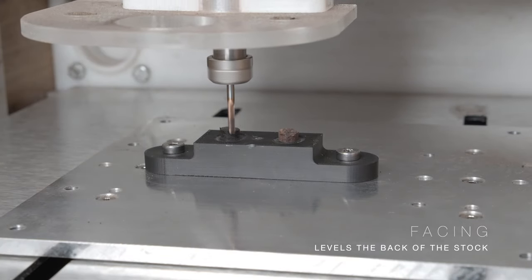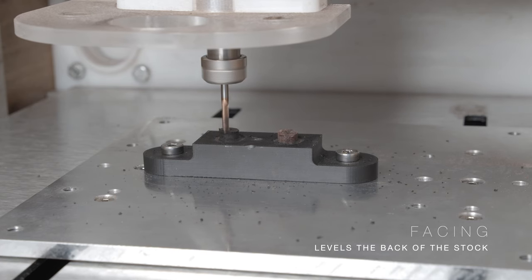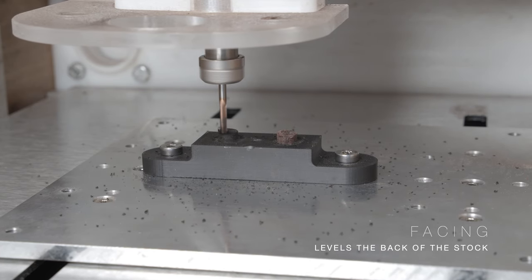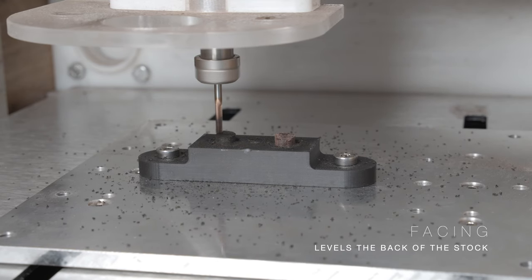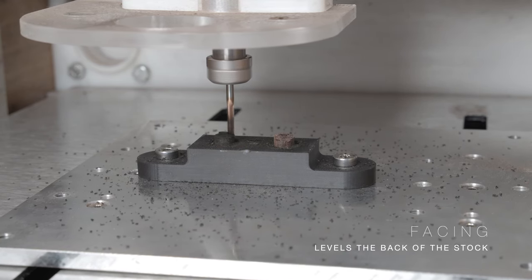The machining of the bottom starts off very similar to the top, where we begin by facing. This removes all of the excess material from sawing the switch tip off of the raw piece of exotic wood, as well as flattens the bottom so that we can continue working on it.